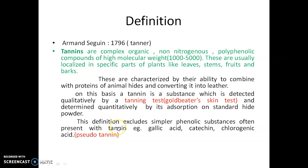Tannins are secondary metabolites widely distributed in plants, usually found in the dead or dying tissues or cells. They exert an inhibitory effect on many enzymes due to protein precipitation, and they contribute protective functions in bark and hardwood.